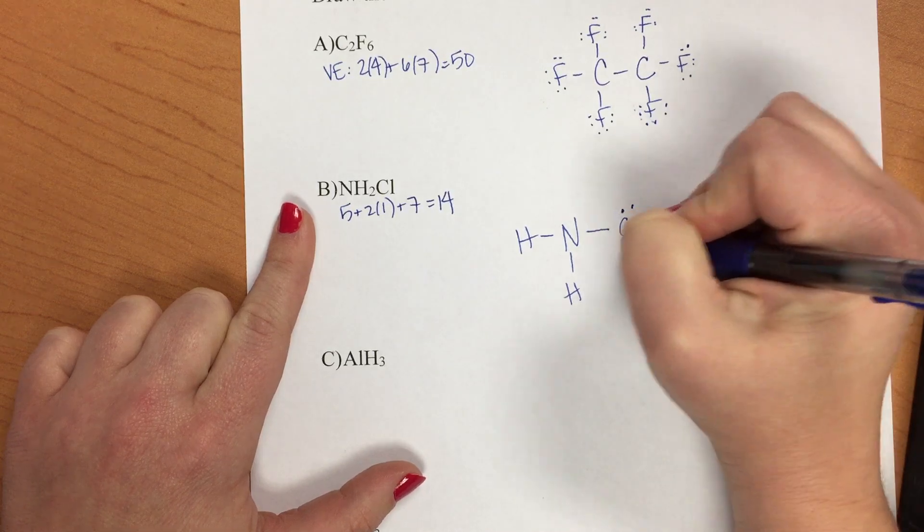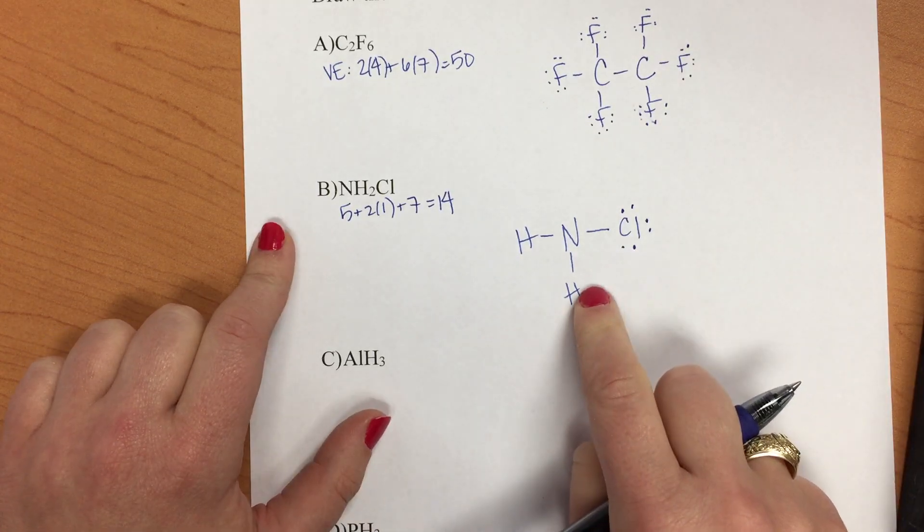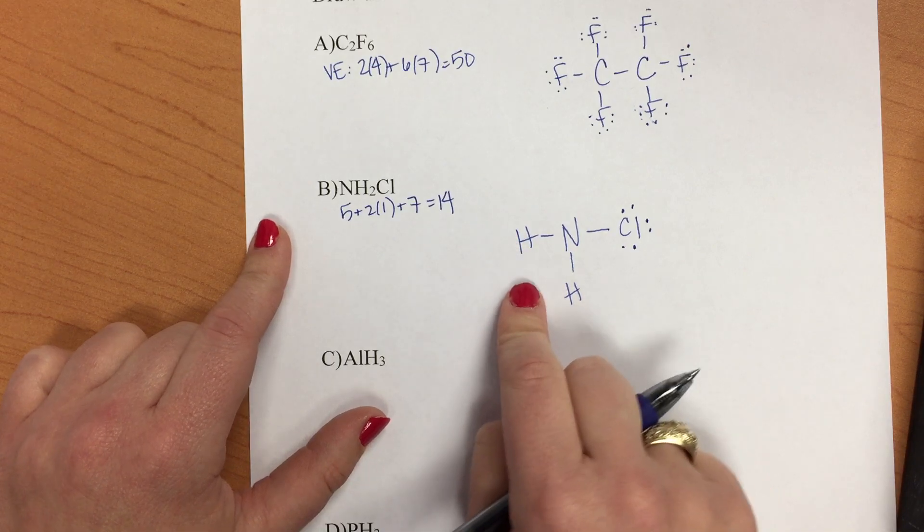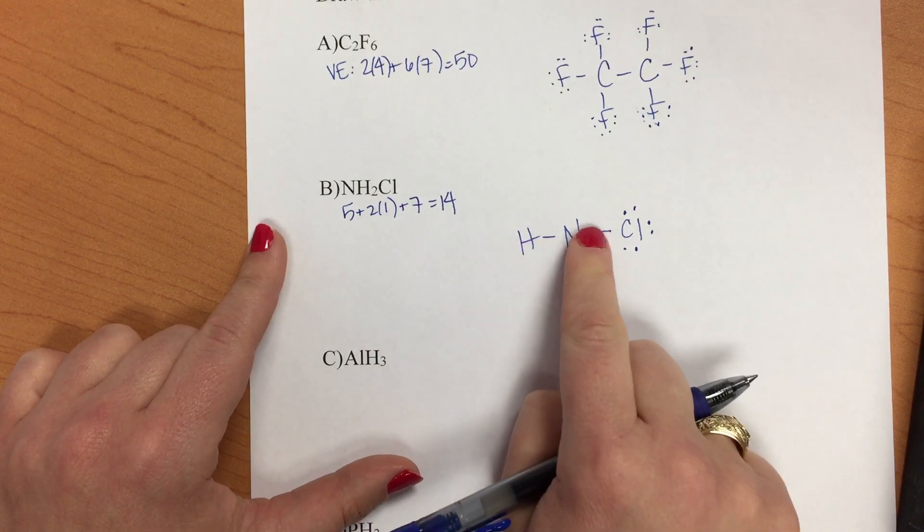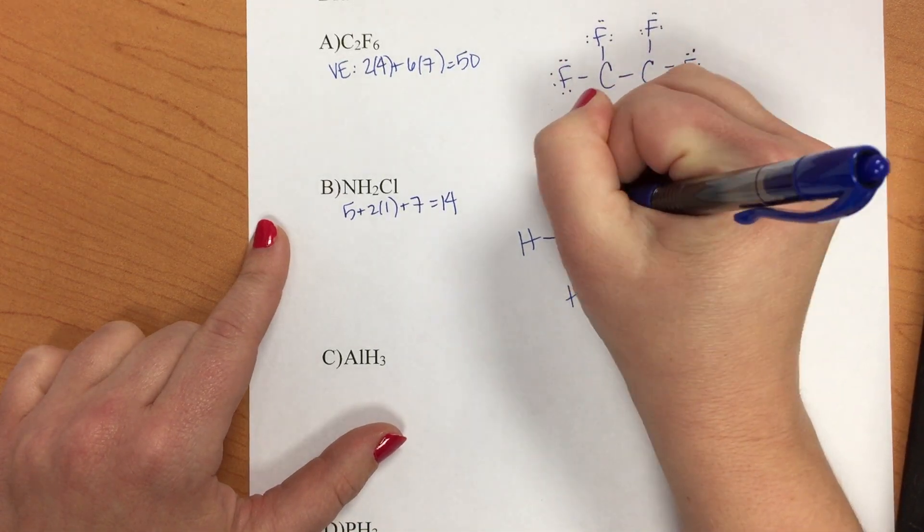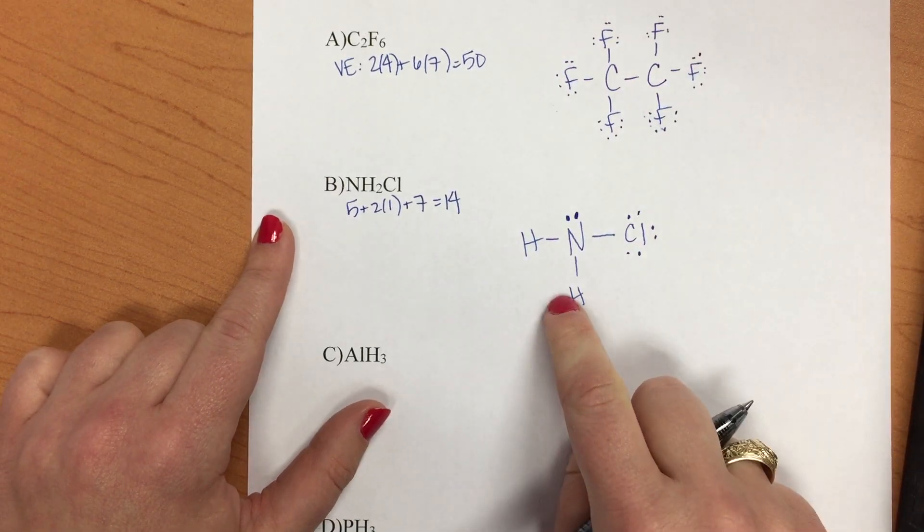Chlorine is going to fill its octet. So it now has eight electrons. Hydrogen only requires two for octet. Those are both done. We should count up to see where we are: 2, 4, 6, 8, 10, 12. The two remaining electrons will go on the nitrogen atom just like this.